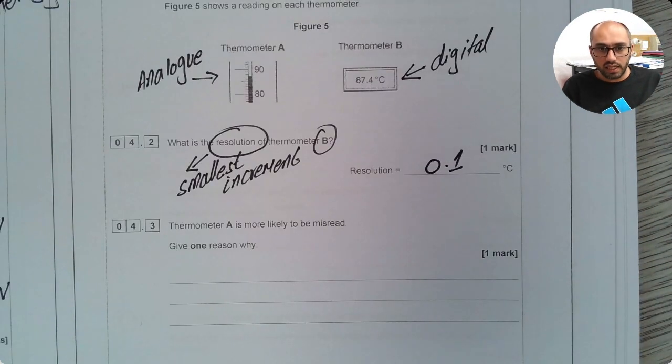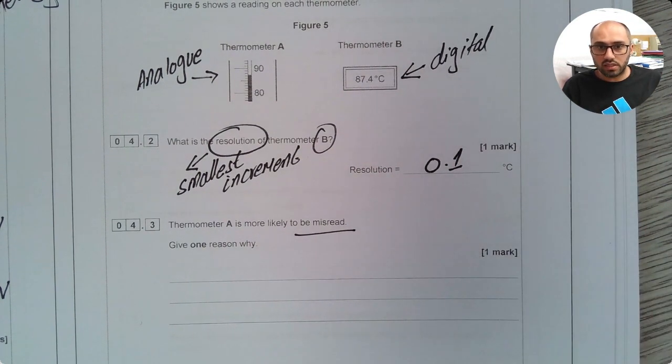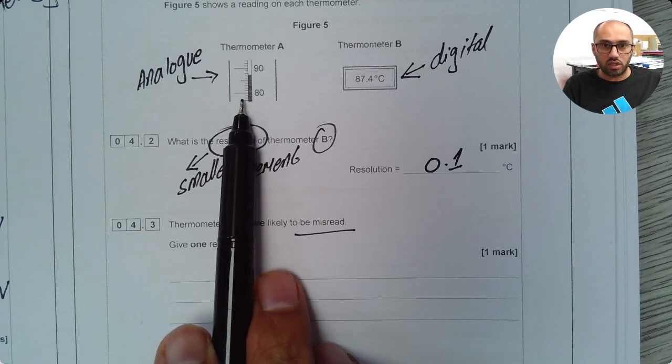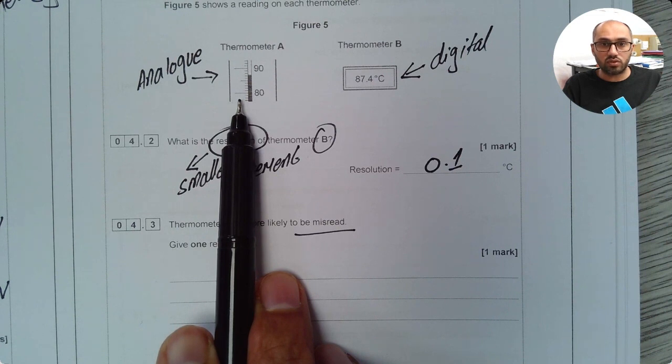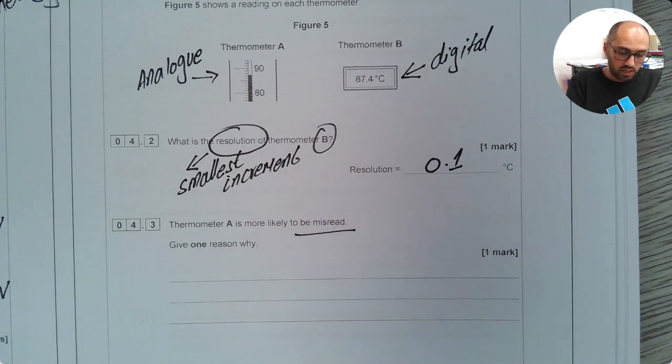The next part says thermometer A is more likely to be misread. Give one reason. This is an analog thermometer. So you have to make sure that your line of sight is at 90 degrees to the reading. If it is not then you'll not be able to record the correct value. And that's what we call parallax error.